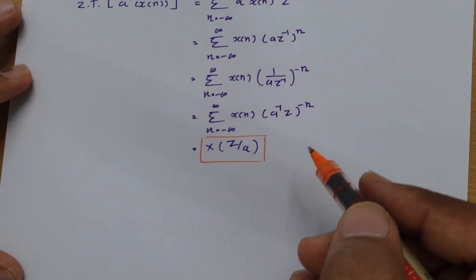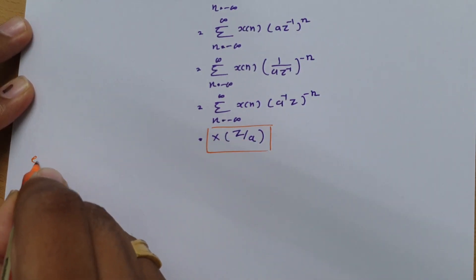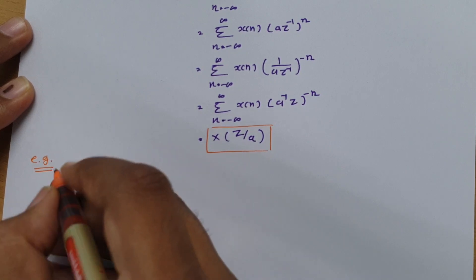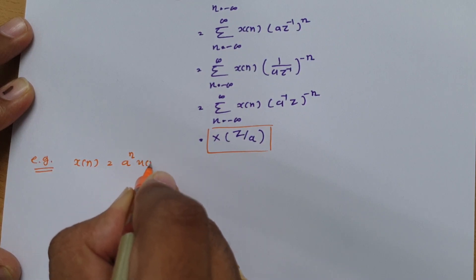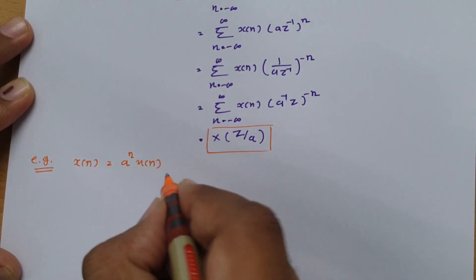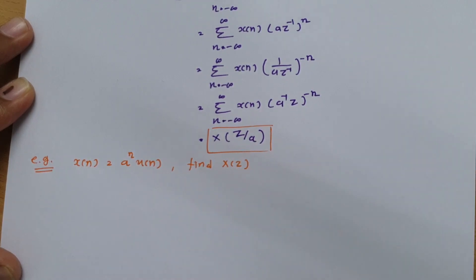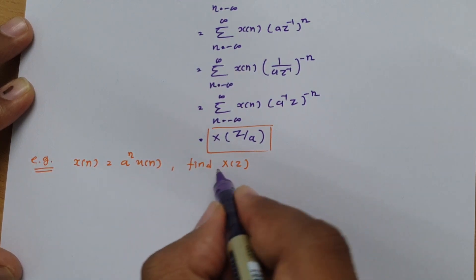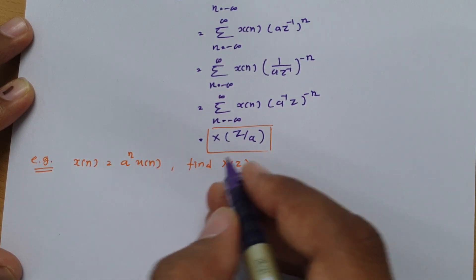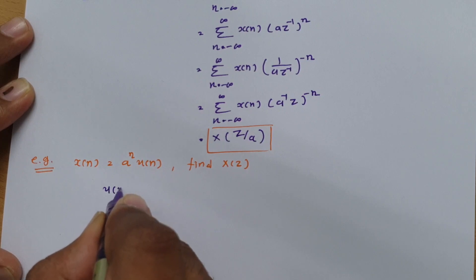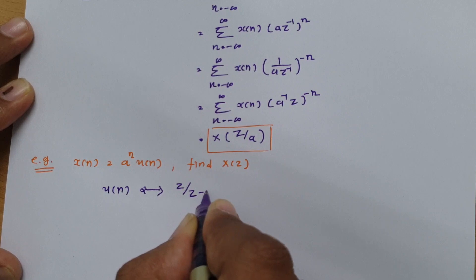Let us look at one example quickly so we can understand how to apply this property. If we have a signal X of n equals A to the power n times U of n, the question is to find X of Z. By using the scaling property we can easily solve this. We know the Z transform of U of n is Z divided by Z minus 1.